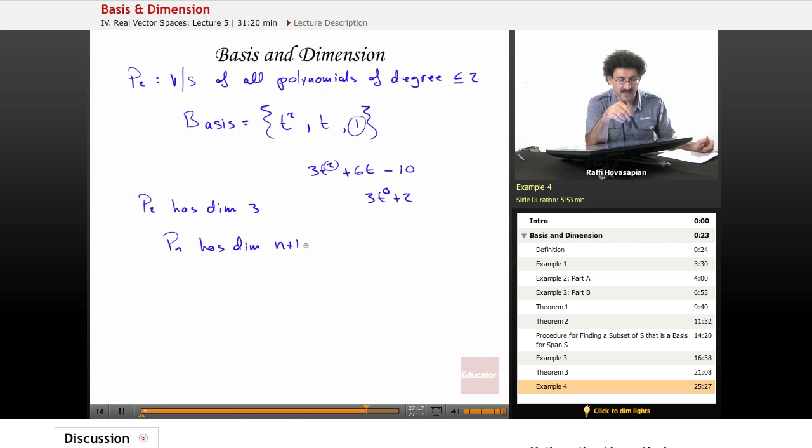Notice that this P2 has a dimension of 3. Well, our 3 space, normal 3 space that we live in, also has a dimension of 3.